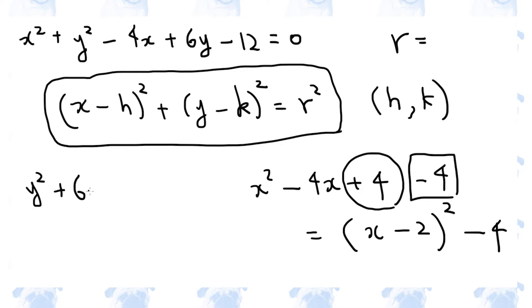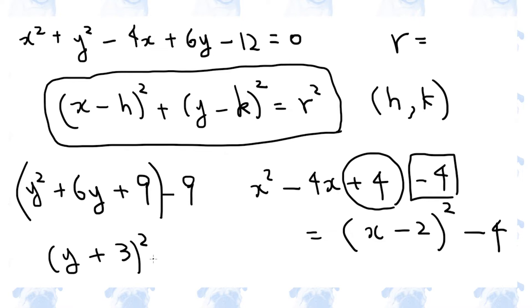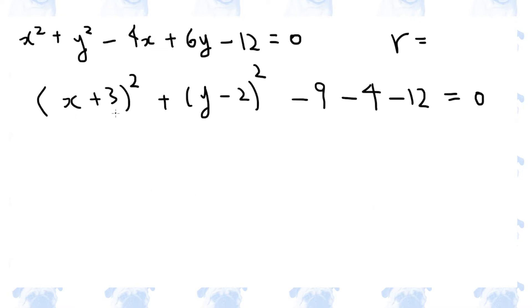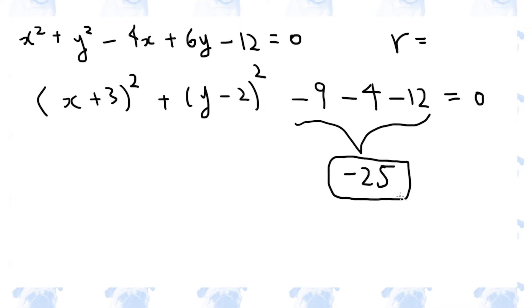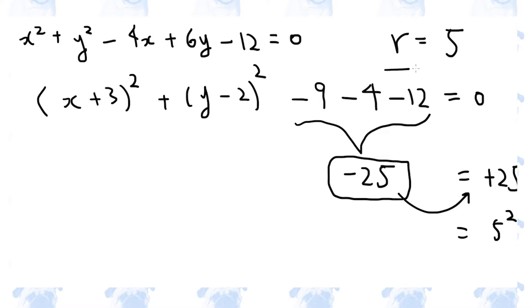Similarly, y squared plus 6y requires 9. So we need to add 9, and then subtract 9. The first three terms can be factorized. So now we have two sets of squared brackets. We need to calculate the constant part — these add up to minus 25. Move it to the right-hand side and it becomes plus 25, which is 5 squared. So the radius is 5.